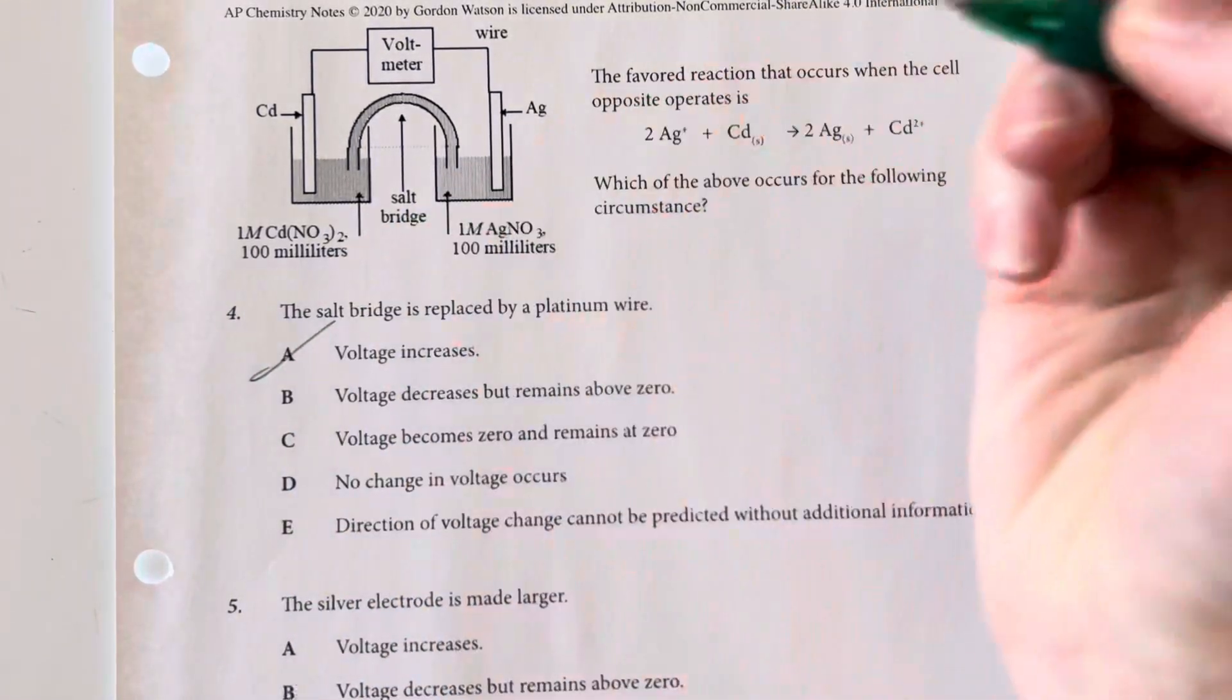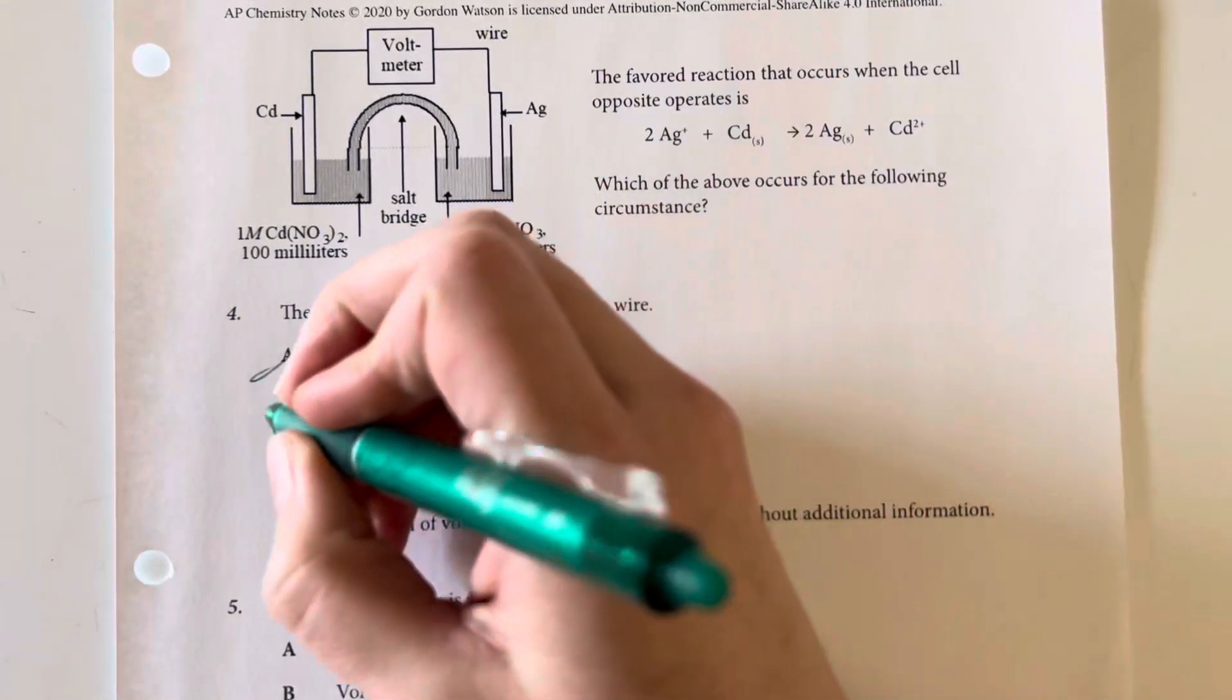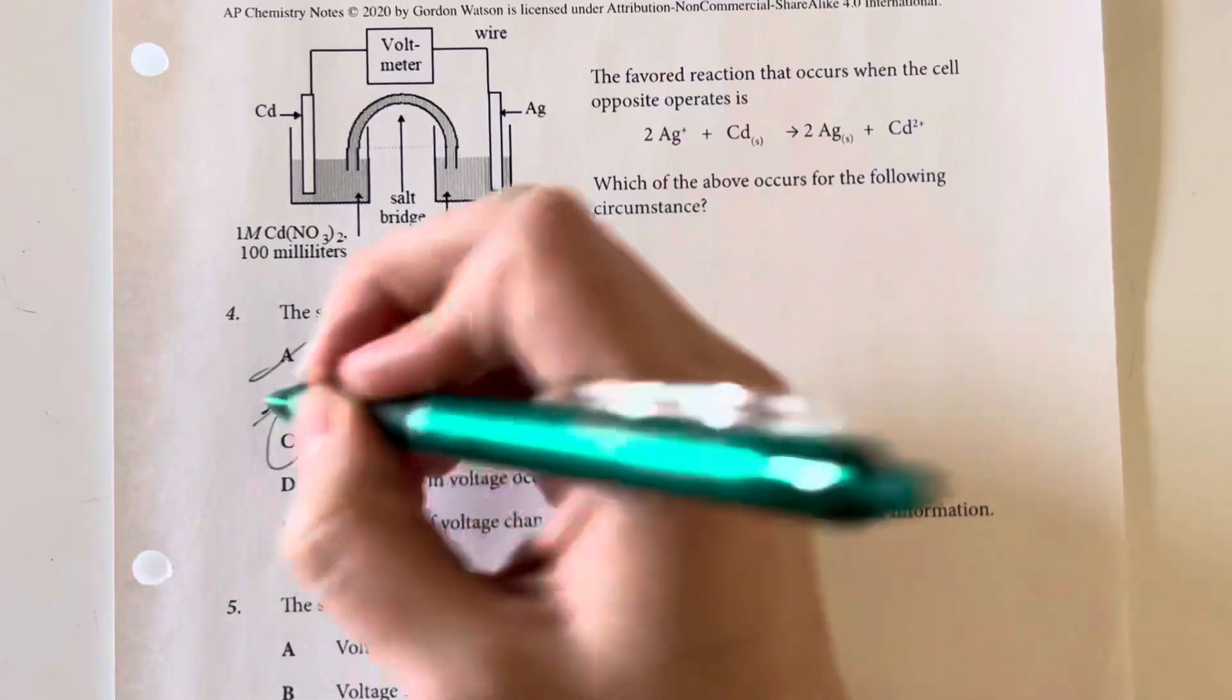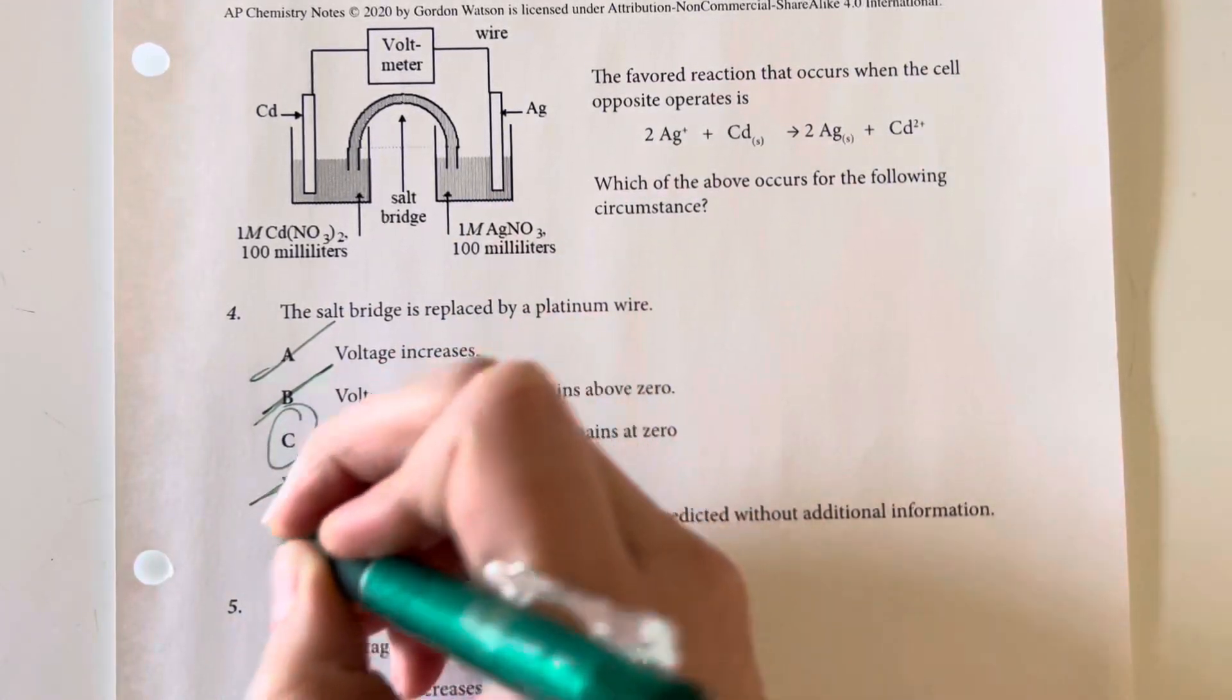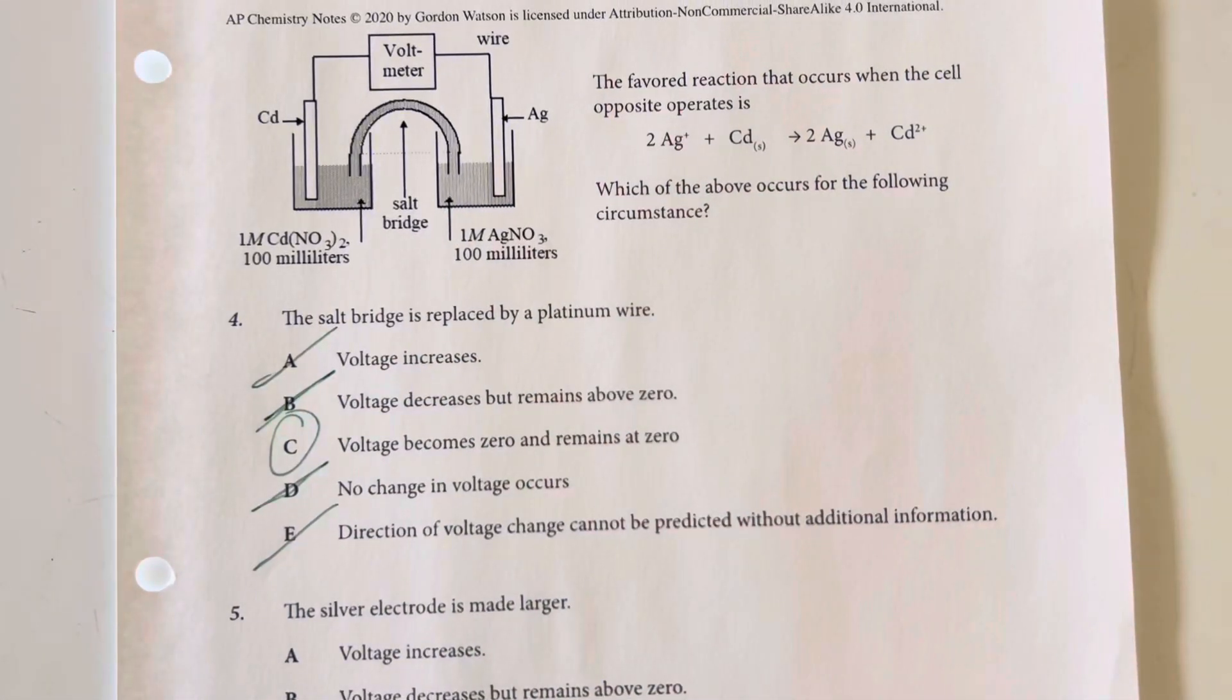The voltage is not going to increase—the voltage won't exist at all. Option choice C says the voltage becomes zero and remains at zero. Again, no salt bridge, no reaction, no cell.